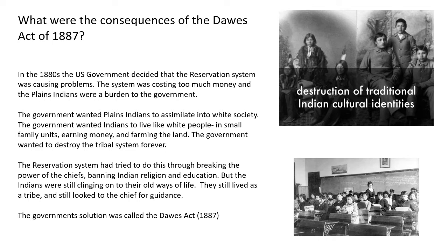Just a brief recap. So in the 1880s, the US government decided that the reservation system was causing problems. The system was costing too much money and the Plains Indians were a burden to the government. Remember, the government wanted Plains Indians to assimilate into white society — to live like white people in small family units, earning money and farming the land. The government wanted to destroy the tribal system forever. The reservation system had tried to do this through breaking the power of the chiefs, by banning Indian religion and forcing education on Plains Indians.